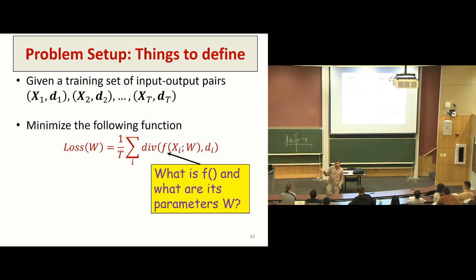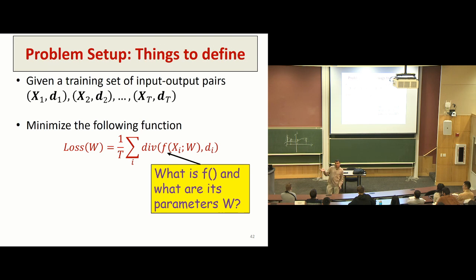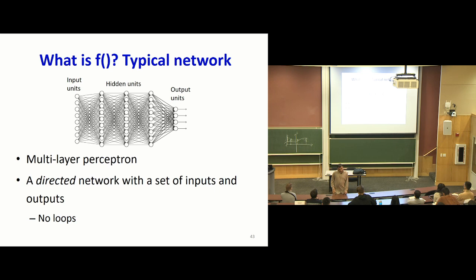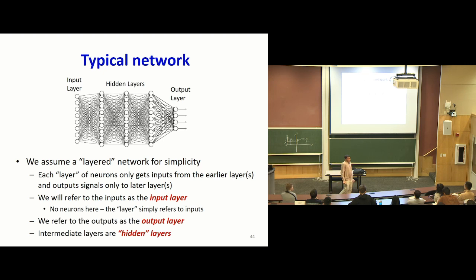Let's start with the function — the easiest thing to define. We know what this function is: it's just a neural network, specifically a multilayer perceptron. We're going to assume it's directed, meaning an input goes in at one end, it flows through the network, and when any neuron has processed a specific input, it's not going to see it again. The information flows directionally from the input to the output. Secondly, we're going to assume it's layered — neurons are arranged in layers, each getting inputs from the previous layer.